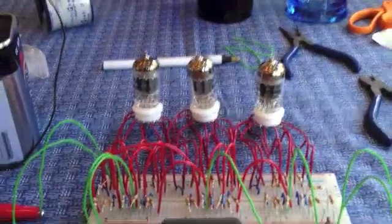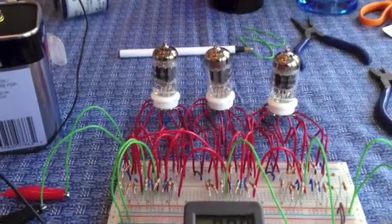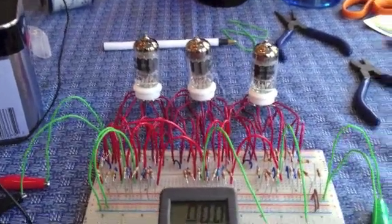Each vacuum tube contains two triodes. A triode acts like a transistor, except it relies on plates instead of semiconductors.